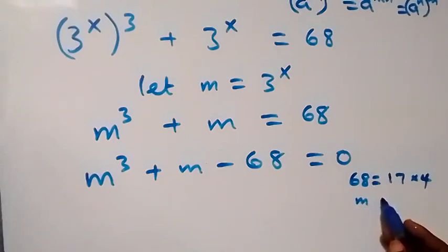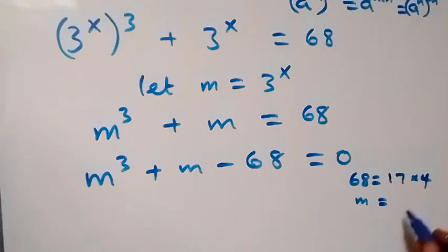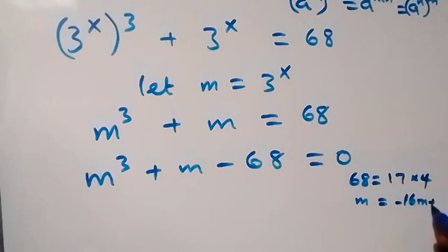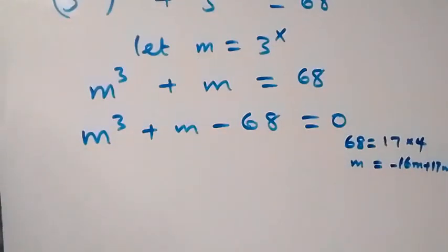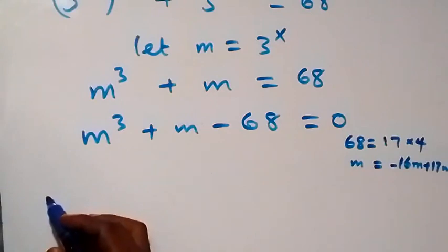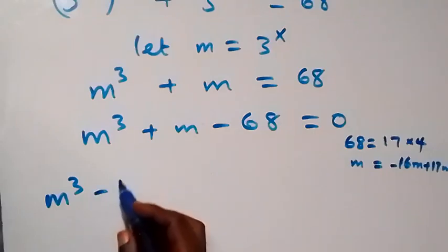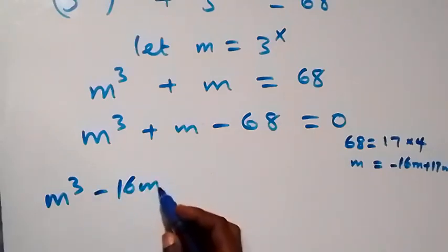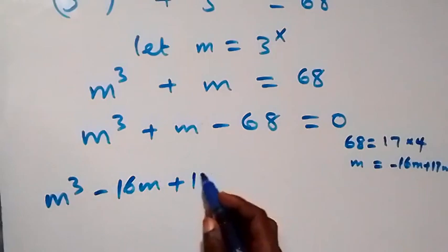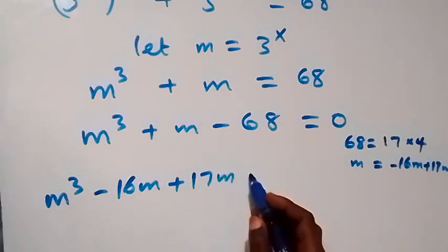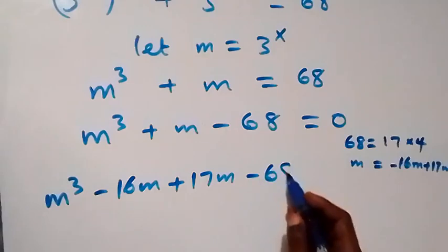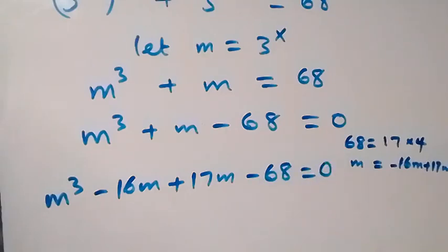We can also write m as minus 16m plus 17m. When we substitute here, what we have can be written as m cubed minus 16m plus 17m minus 68 equals zero.